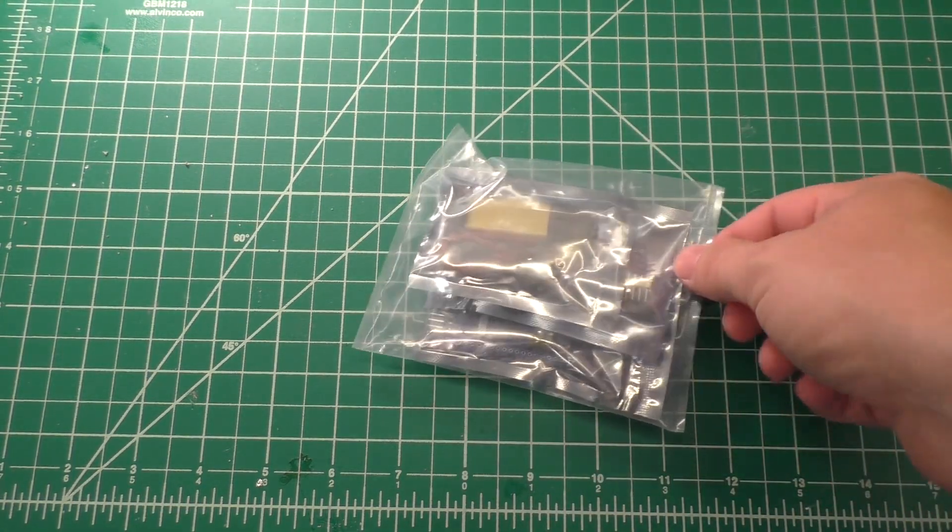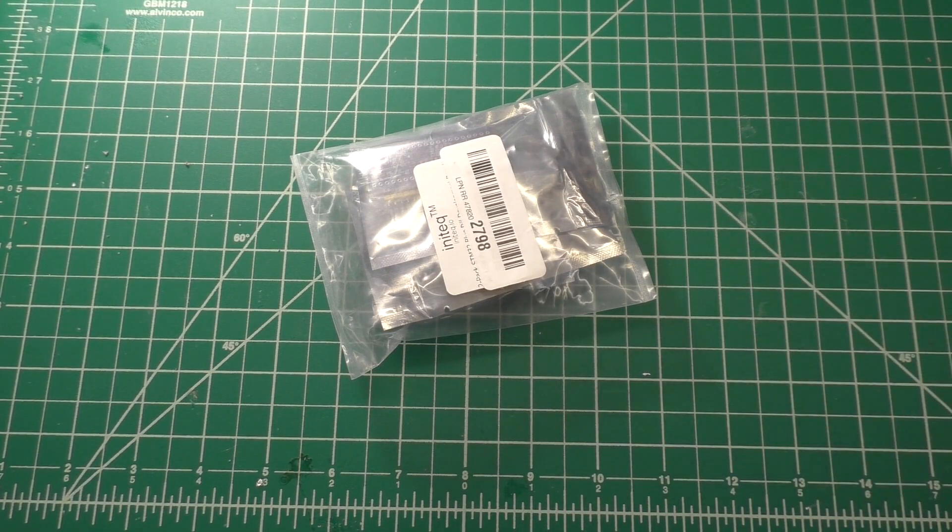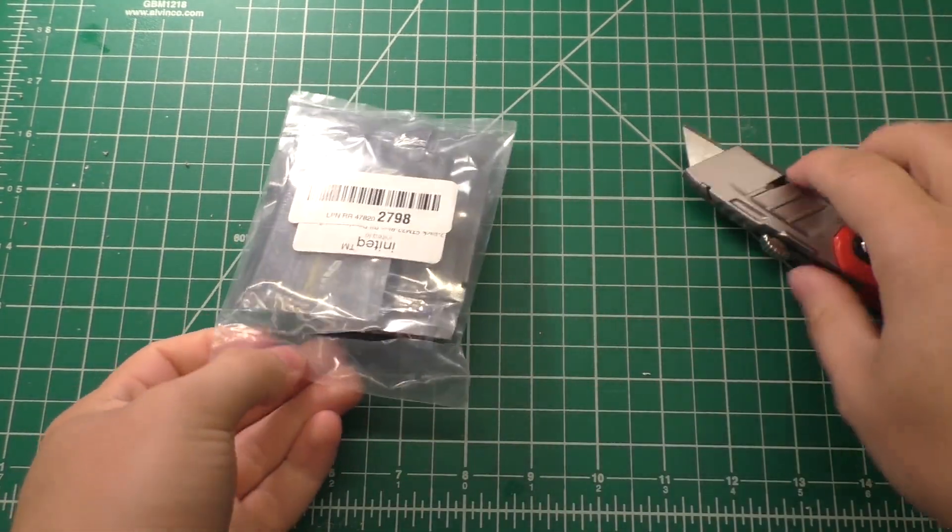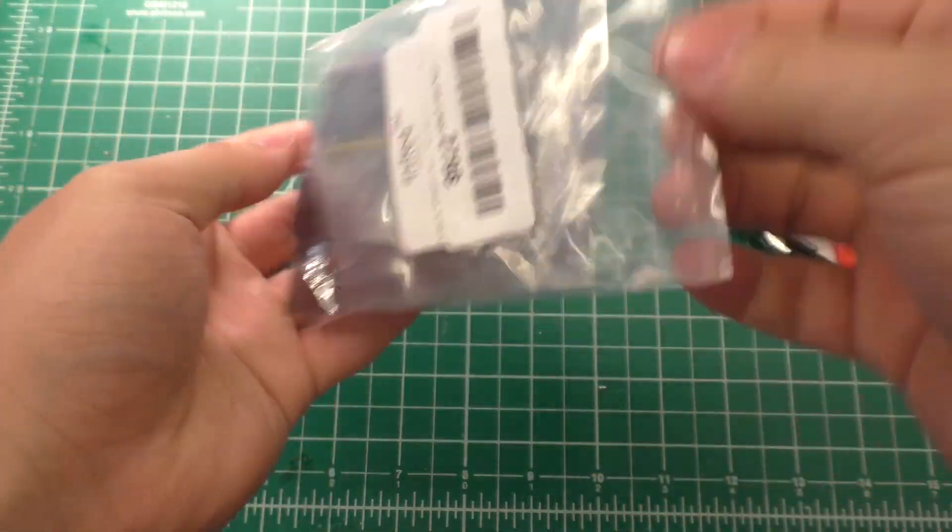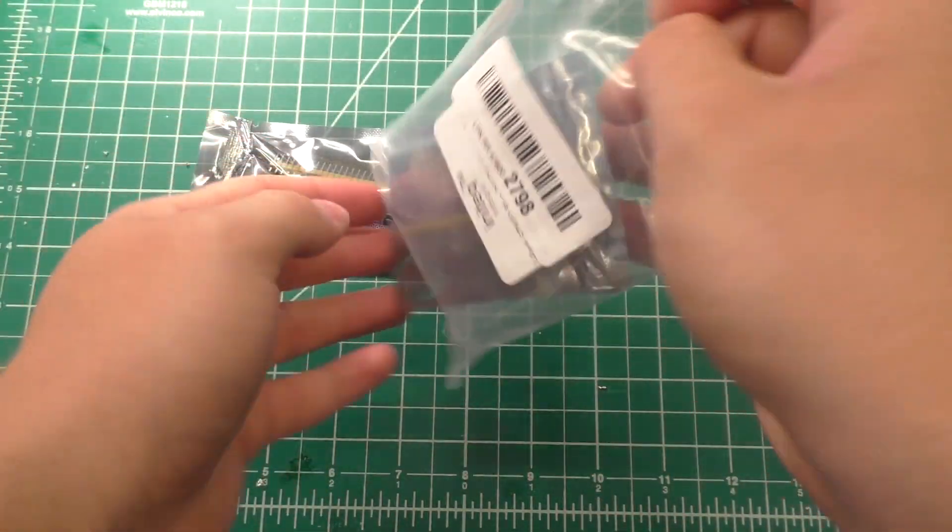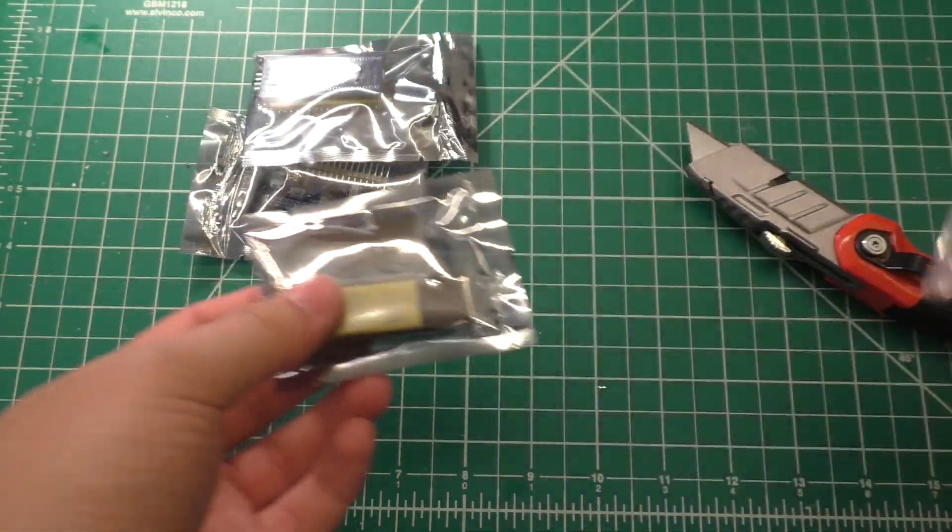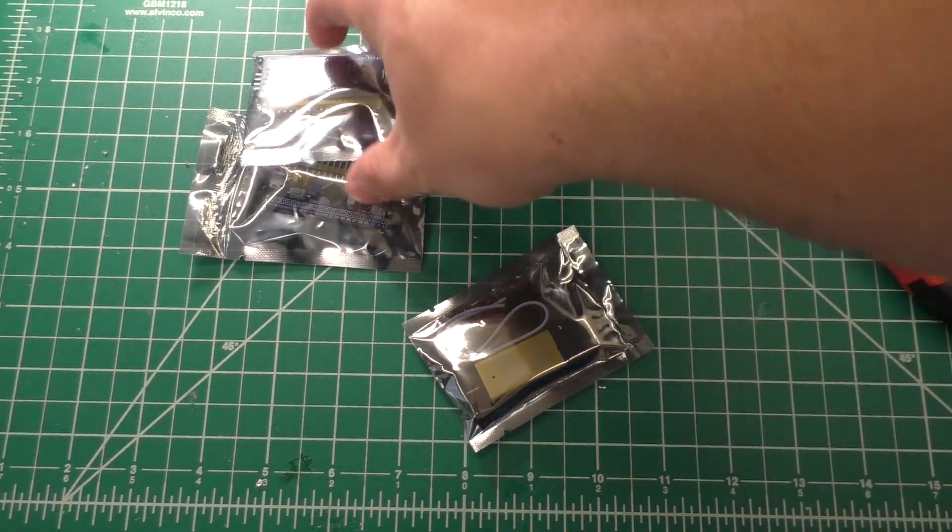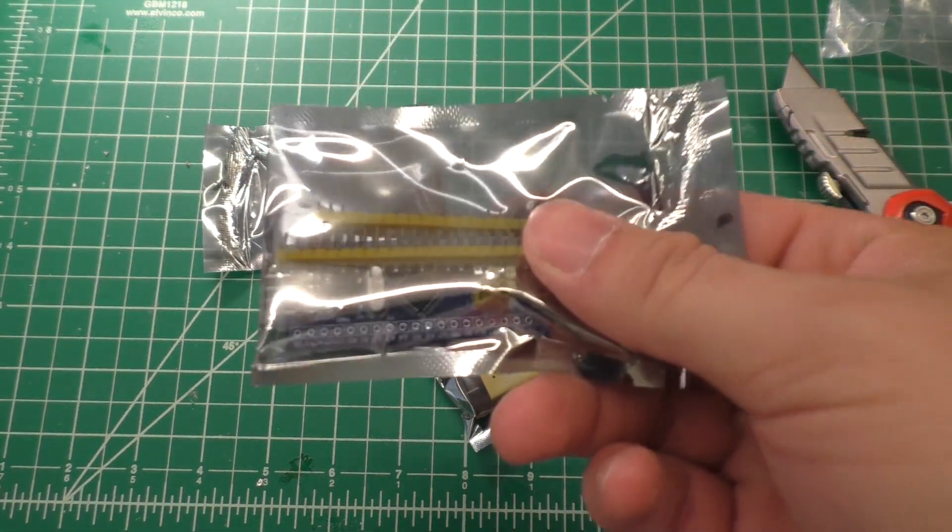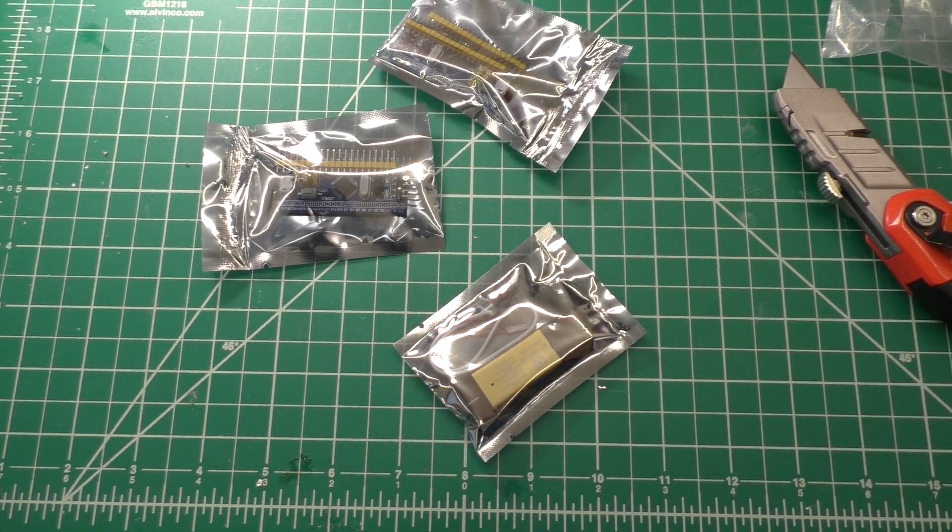Alright, and last but not least we have this bag which is actually sealed shut. We're just gonna go ahead and open up here. Alright, so these are the STM32 Arduino development board things. So these are oftentimes referred to as the blue pill boards, and I have another one around here somewhere. Right here.